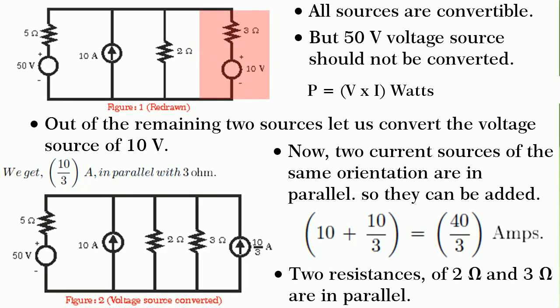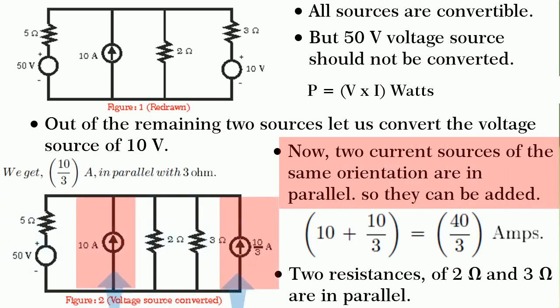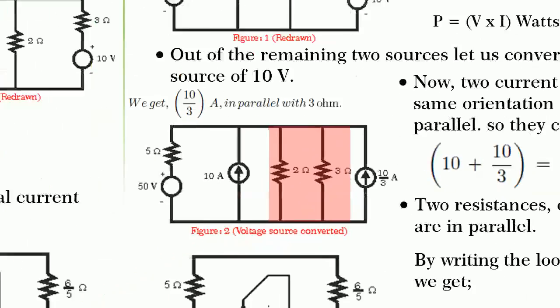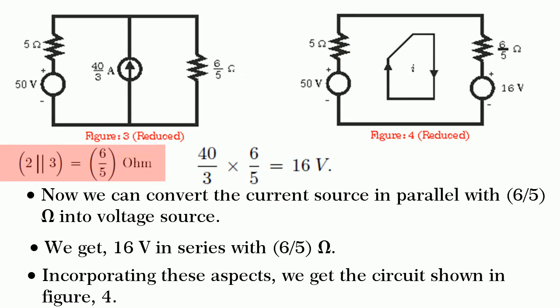By converting 10 volt source, we get 10 divided by 3 ampere in parallel with 3 ohm as shown in figure 2. By observing figure 2, you find that two current sources of the same orientation are in parallel. Hence, their resultant is 40 divided by 3 amperes. Similarly, 2 ohm and 3 ohm are in parallel and their resultant is 6 divided by 5 ohm.